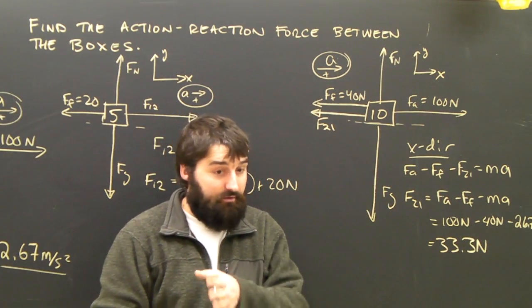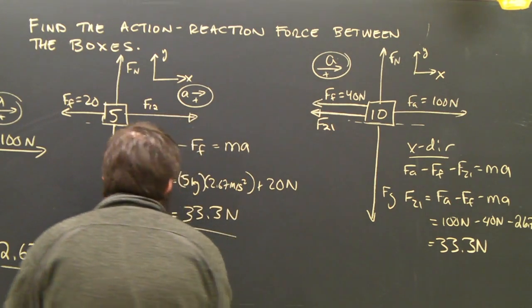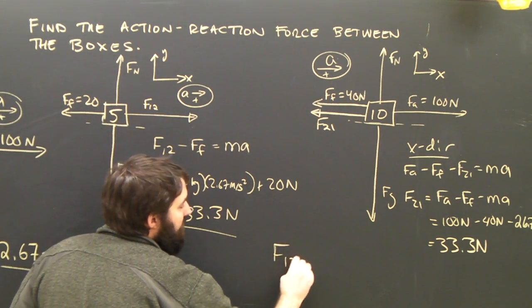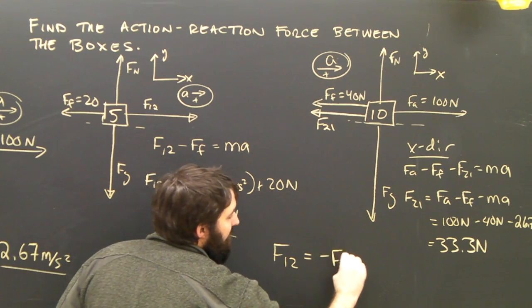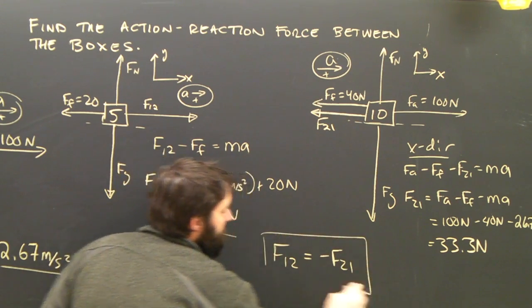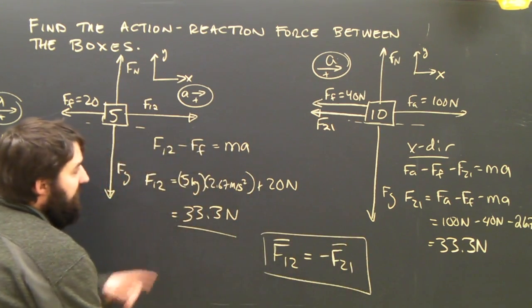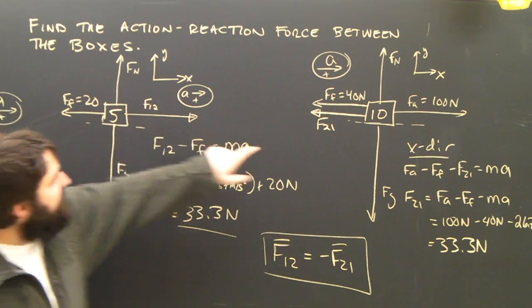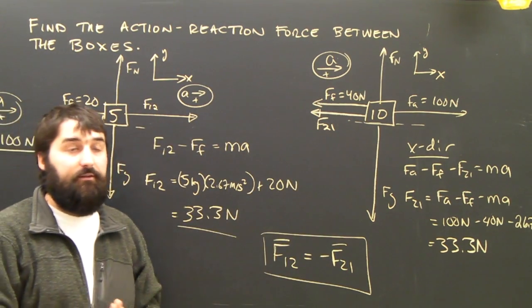It's the same, not a coincidence. Newton's third law tells us that F12 has to be equal to negative F21. They are certainly equal in magnitude and clearly you can see from the free-body diagrams that they are opposite in direction.